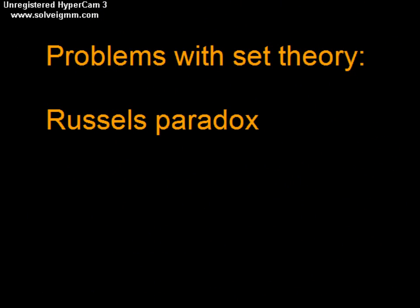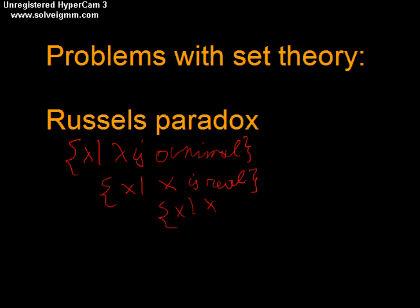But Cantor's set theory had many problems, and they could all trace back to his very loose definition of a set. A set to him was any possible collection that satisfies a certain property. For example, there is a set of all animals, denoted by all x such that x is an animal. More mathematical examples are all x such that x is real, or all x such that x equals 2. This is all very fine and dandy.